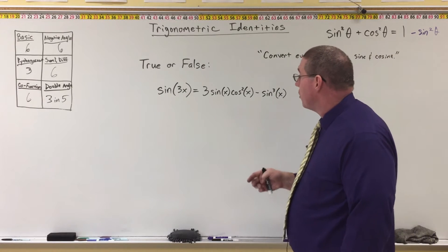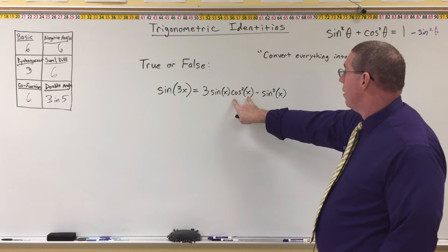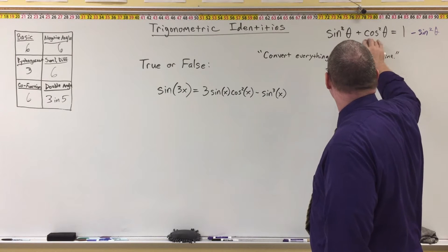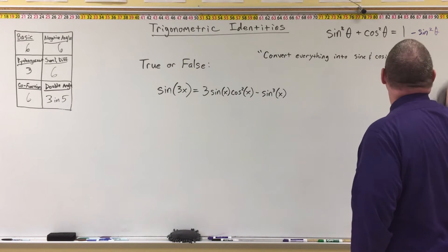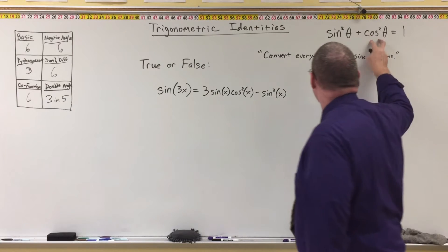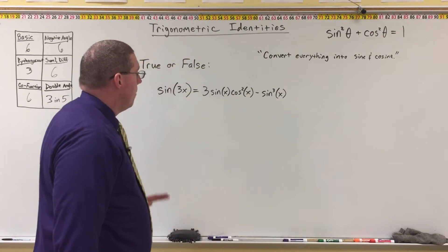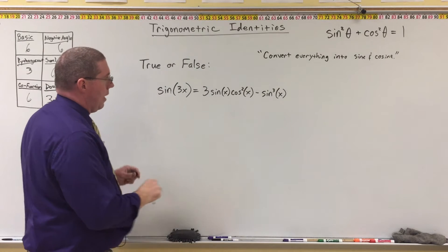But basically, we have to look for things to replace with other things. We could replace this cosine squared. If we go up here to the Pythagorean identity, we can solve for cosine squared and take that and put it in here. But what I'm going to do instead is,